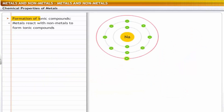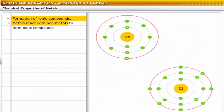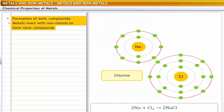Formation of ionic compounds: metals lose electrons to non-metals to form strong ionic compounds. For example, sodium loses electrons to chlorine to form sodium chloride, which is an ionic compound.